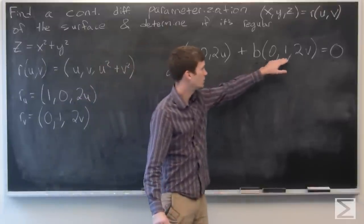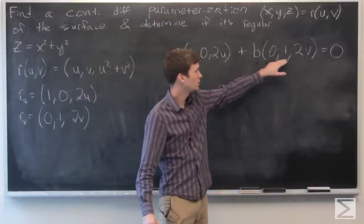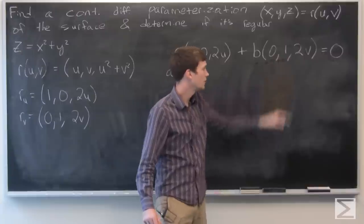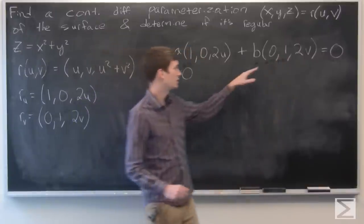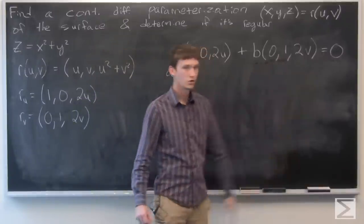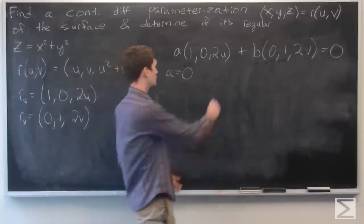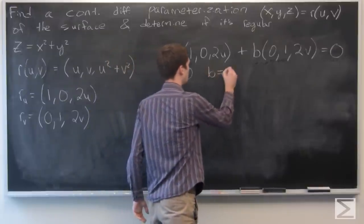And similarly, b is the only term that is going to be affecting the second component, which also needs to be 0. So that implies that b equals 0.